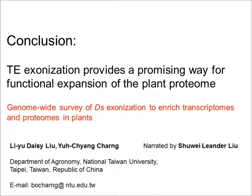In conclusion, TE exonization provides a promising way for functional expansion of the plant proteome, with an example being the C-terminal isoforms of CUH.